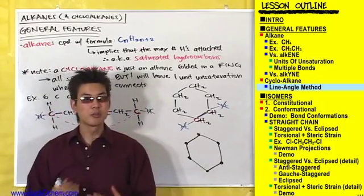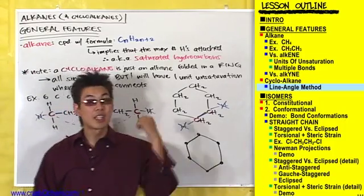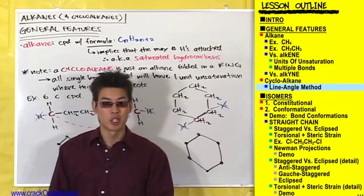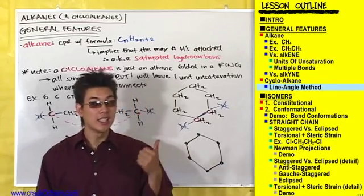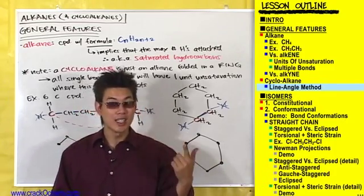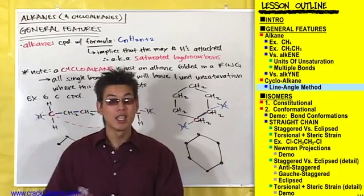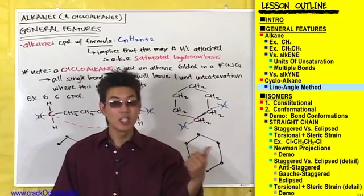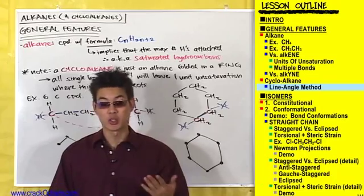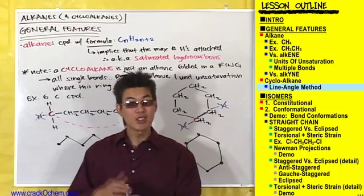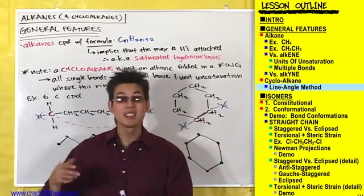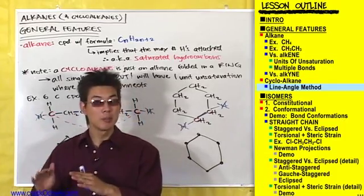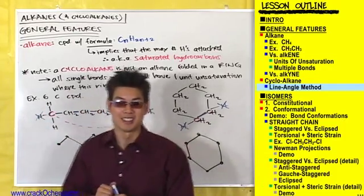So that was the general features of alkanes. Alkanes are just saturated hydrocarbons. I also showed you alkenes and alkynes as a comparison to alkanes to clarify what it means to be a saturated or an unsaturated hydrocarbon. We will get into alkenes and alkynes in later chapters, but for now let's talk a little bit more in depth about alkanes.